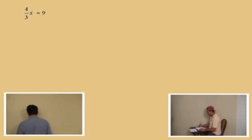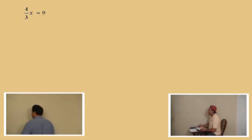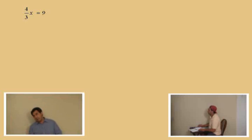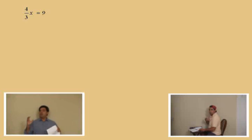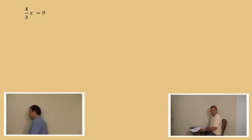In this problem we have a fraction in front of the x. Some of you have said you do it this way or that way — that's fine, I'll do it a couple of ways. So four thirds x equals nine. The first way I'm going to do is using the reciprocal, which means we take the reciprocal of four thirds and multiply it to both sides. What is the reciprocal of four thirds? Three fourths — that's right.